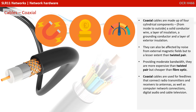Coaxial cables are made up of four cylindrical components from inside to outside: a solid conductor wire, a layer of insulation, a grounding conductor and a layer of exterior insulation. They can also be affected by noise from external magnetic fields, but to a much lesser extent than twisted pair.